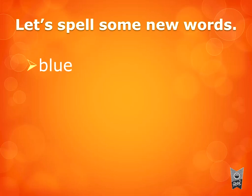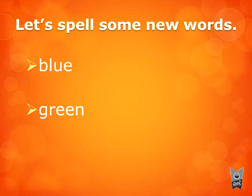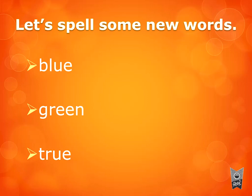B-L-U-E. Blue. Repeat after me. B-L-U-E. Blue. G-R-E-E-N. Green. Since there are two E's together, what have I said? Double E. Repeat after me. G-R-E-E-N. Green. Very good. T-R-U-E. True. Say it with me once more. T-R-U-E. True.